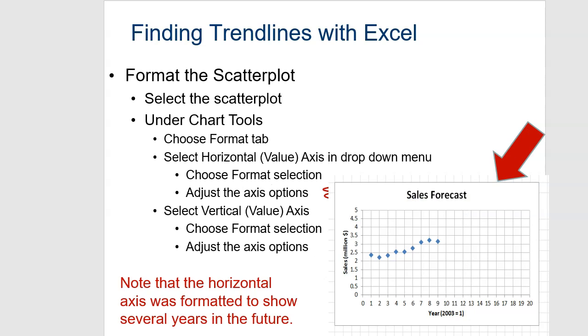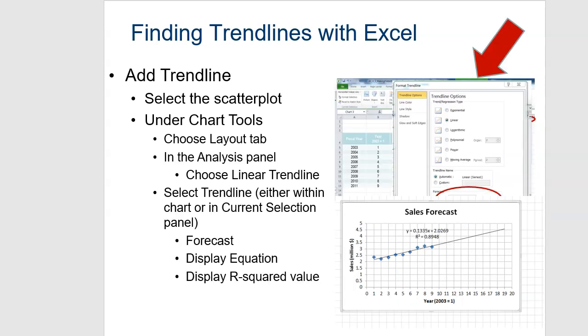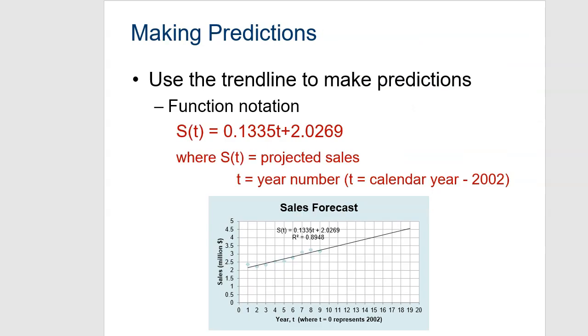Once you have that in Excel, you're going to choose add a best fit line, and then tell it to include the equation and the r square value. And the equation will be in the y equals mx plus b format, and you can turn that into function notation by saying sales as a function of time is equal to the slope times the time in the domain here plus the y-intercept.